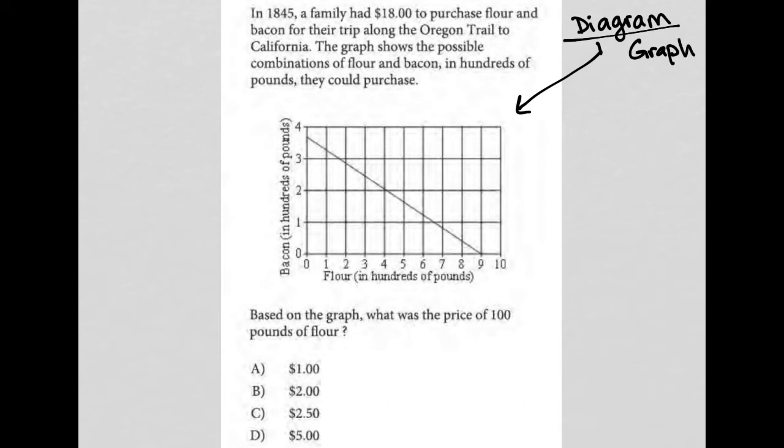The question says, in 1845, a family had $18 to purchase flour and bacon for their trip along the Oregon Trail to California. So $18 is going to somehow give them some flour and bacon.